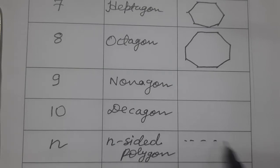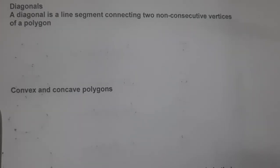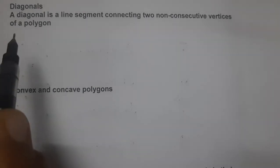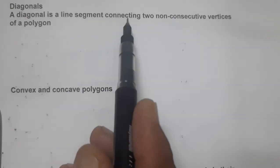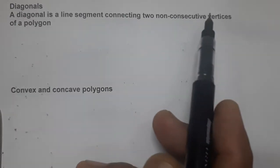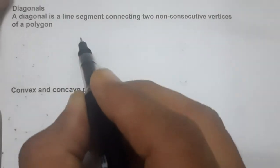So it is clear how we classify polygons. Now we will cover more concepts before starting the exercise. Next is diagonals. A diagonal is a line segment joining or connecting two non-consecutive vertices of a polygon.